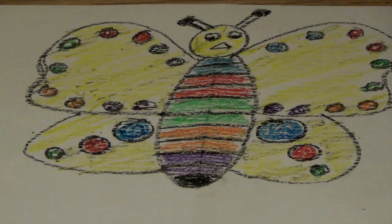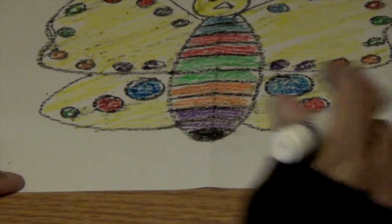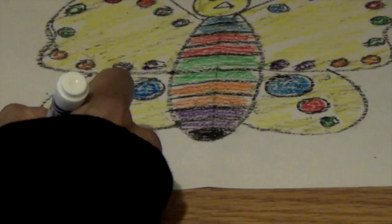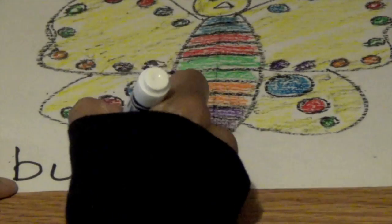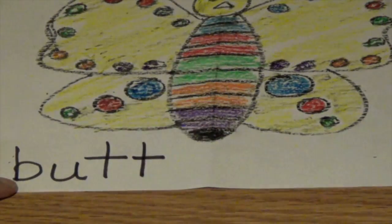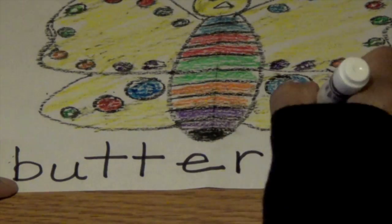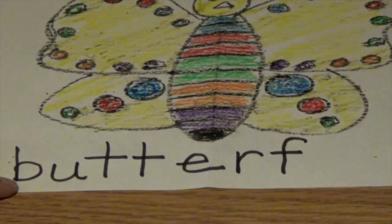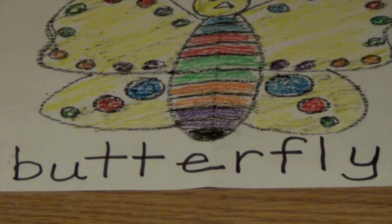And boys and girls, how do we spell butterfly? How do you spell it? B, U, T, T, E, R, F, L, Y. Butterfly!